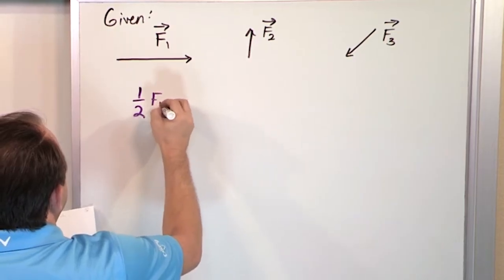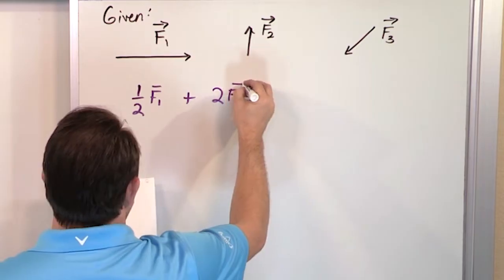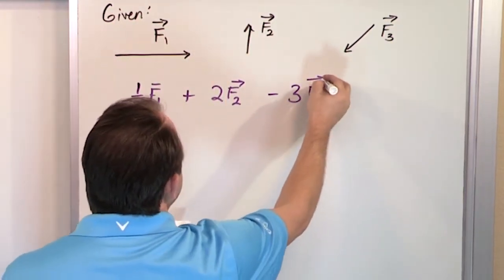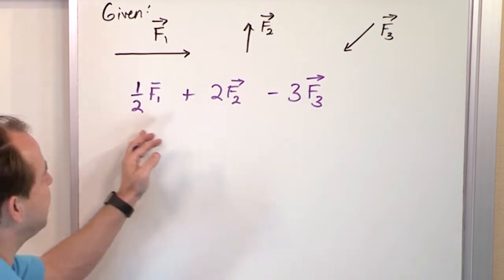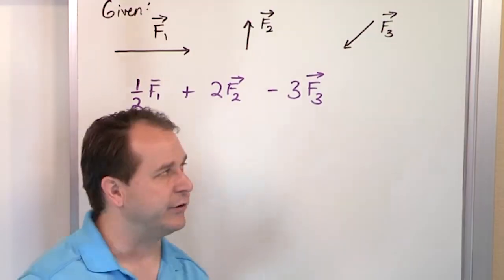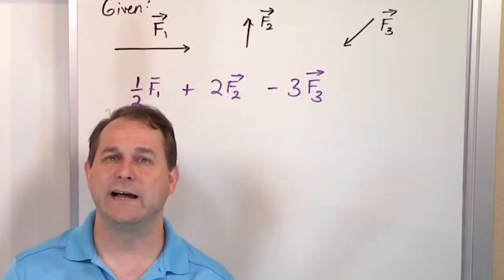One half times vector F1 plus two times vector F2 minus three times vector F3. Now you see you're using multiple skills here because you have to know how to add the vectors together, but you also have to know how to multiply them by scalars, which we just learned. And you also have to figure out or remember how to do that subtraction, which we learned in the last section.